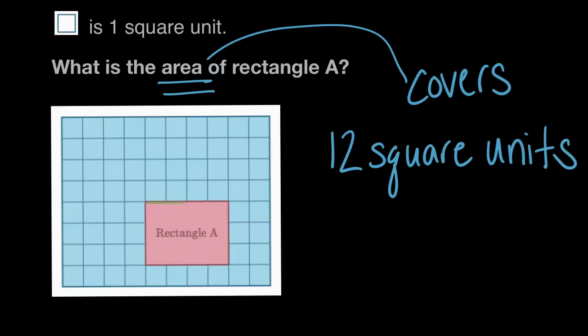this top row is four square units long. One, two, three, four. It has a length of four units. So that means the top row will have one, two, three, four square units inside of it.